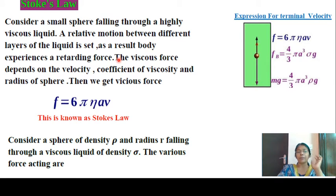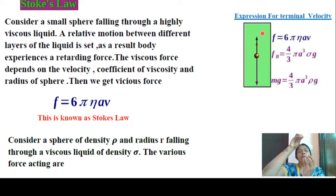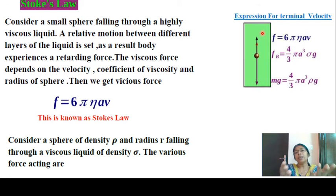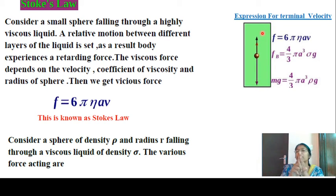Consider a small ball falling through a highly viscous liquid. As the ball or small sphere falls, weight mg acts downwards. The viscous force from the fluid layers acts upward, opposing the motion.